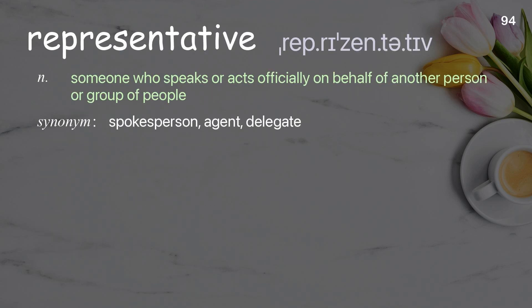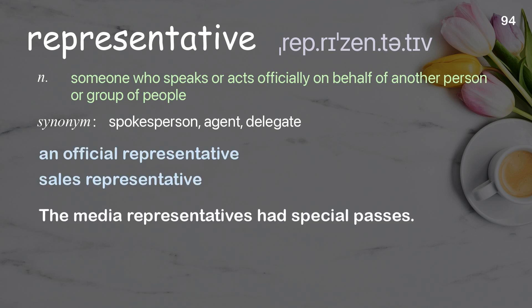Representative: someone who speaks or acts officially on behalf of another person or group of people. Examples: an official representative, sales representative. The media representatives had special passes.